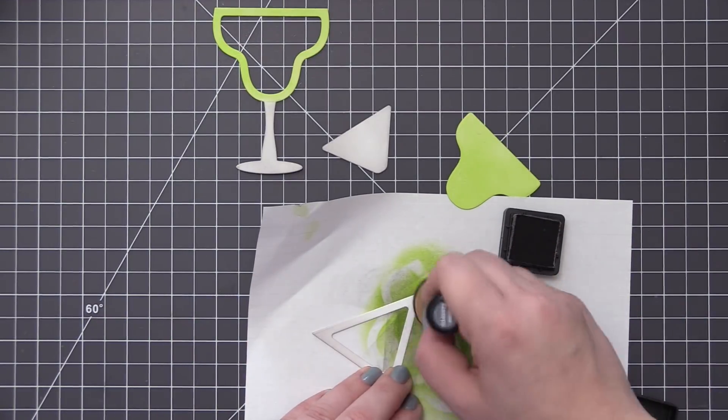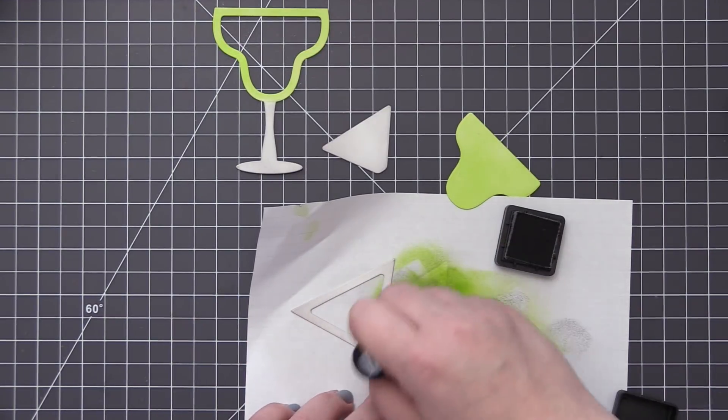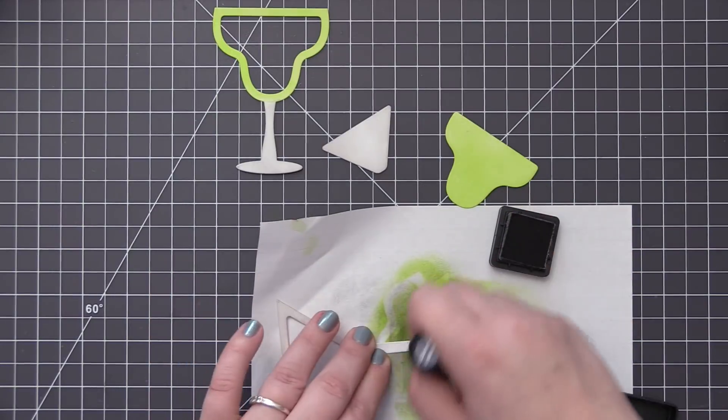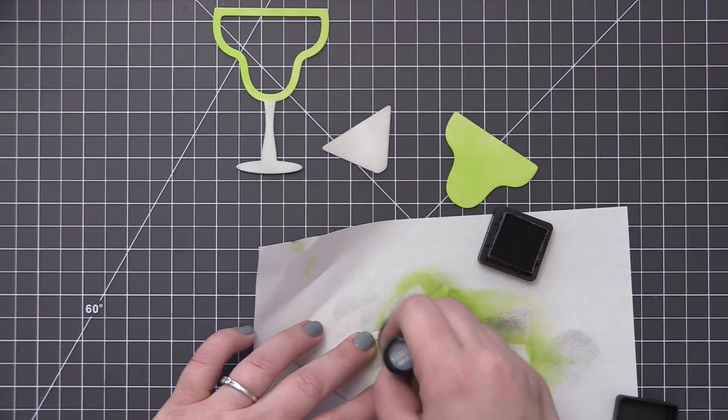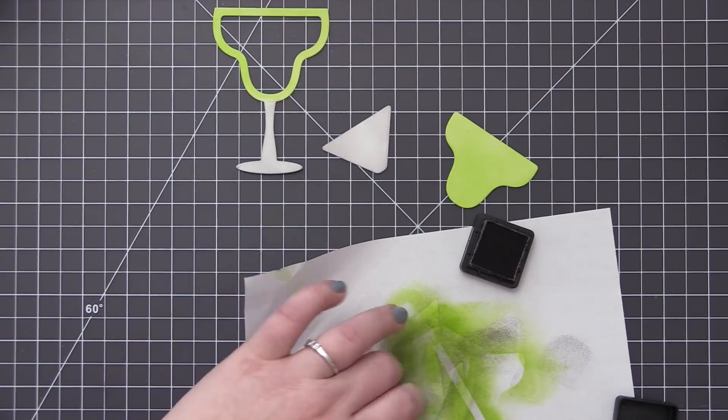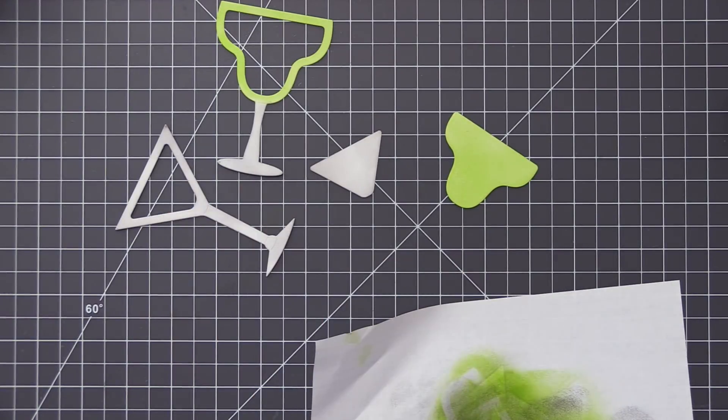Once I had the margarita glass finished I moved on to the martini glass and this one we're doing all with hickory smoke. So I did a little bit of shading on that interior piece and now I'm doing the same with the actual glass shape. And I'm just adding that gray color to the sides of the glass as well as the stem just to give it some really nice shading.